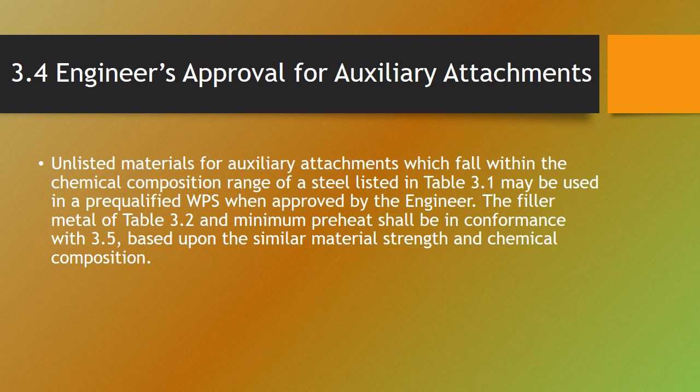Unlisted materials for auxiliary attachments which fall within the chemical composition range of a steel listed in Table 3.1 may be used in a pre-qualified WPS when approved by the engineer. The filler metal of Table 3.2 and minimum preheat shall be in conformance with 3.5 based upon similar material strength and chemical composition.